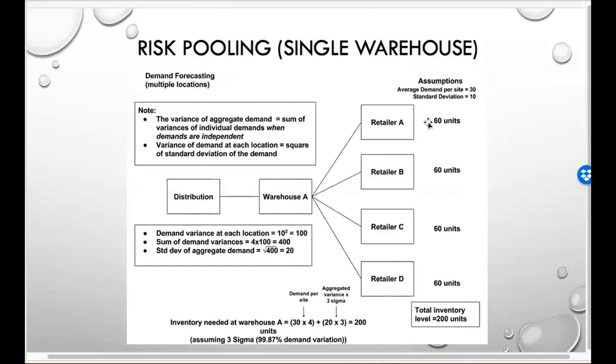We still have 30, the average demand per site, and the standard deviation is 10. So each site still needs 60 units if we're going to fill the required management required amount of units. But what happens now is that when we aggregate the demand, we no longer have to worry about the standard deviation of 10 per site. We're going to aggregate the demand from all four retailers at the warehouse. The way you do it, it shows you there on the second screen. It shows you how you calculate it. It's very simple.